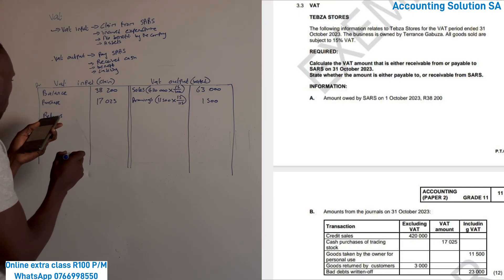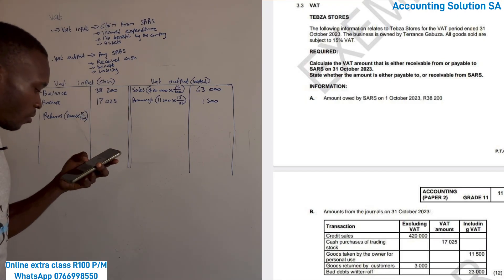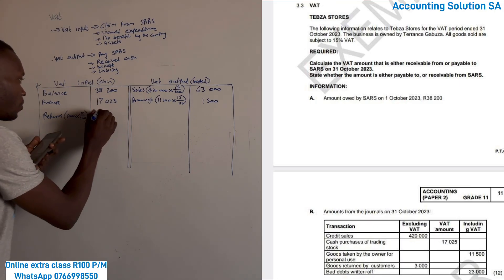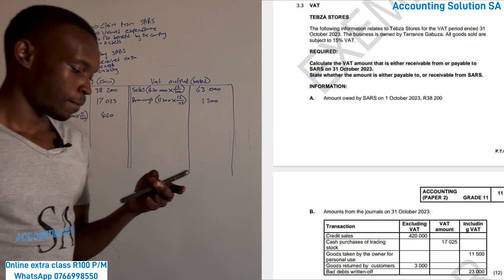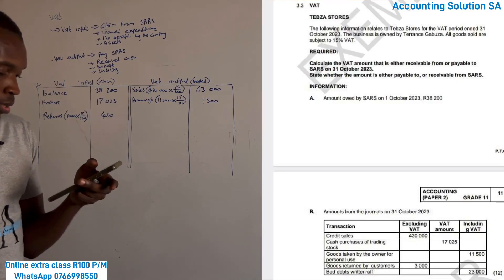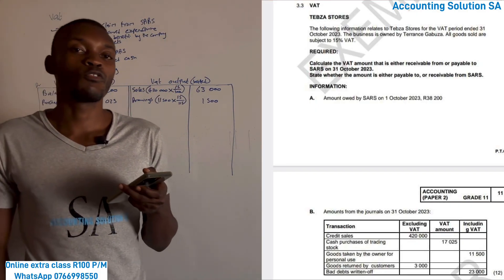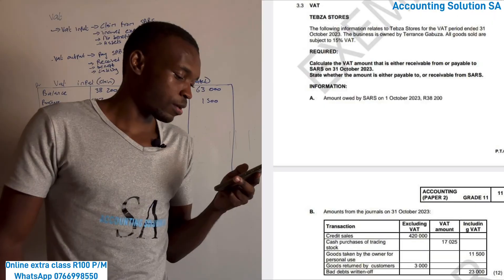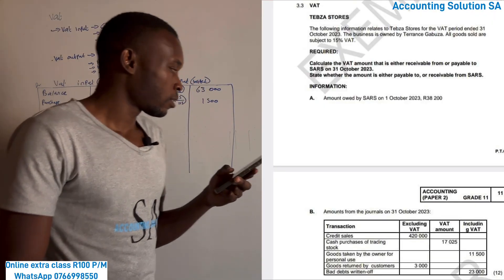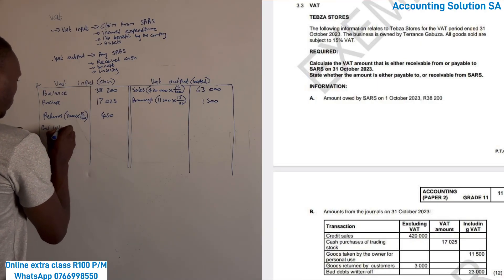It's gonna be 3,000 multiply by 15 over 100. It's 100 because we take it from exclusive column: 450. And the last one, bad debts. Did we benefit from bad debts? If we have written someone off, did we benefit? We didn't benefit because this simply indicates that this person has never come back and paid us. It must come this side. We didn't benefit because this person never paid us. 23,000 multiply by 15 over 115, it's gonna give us 3,000.